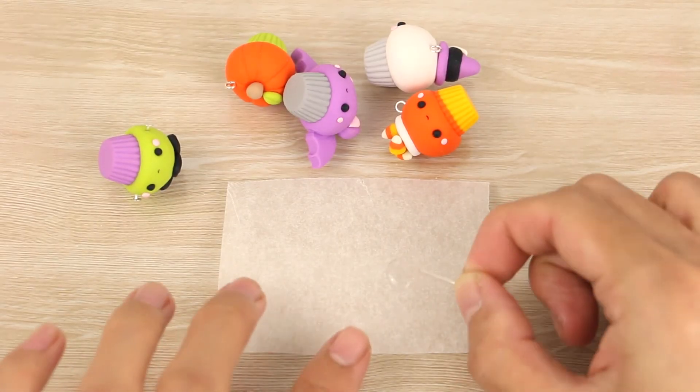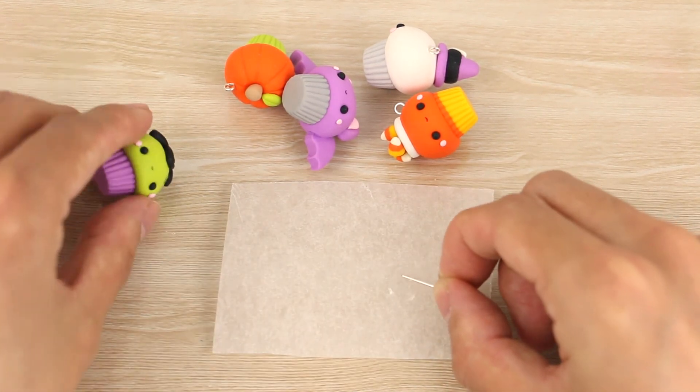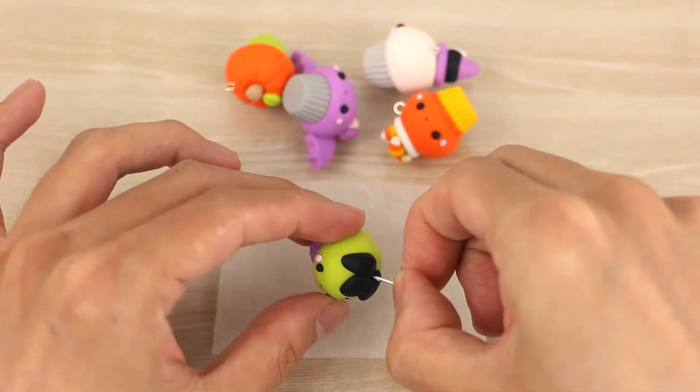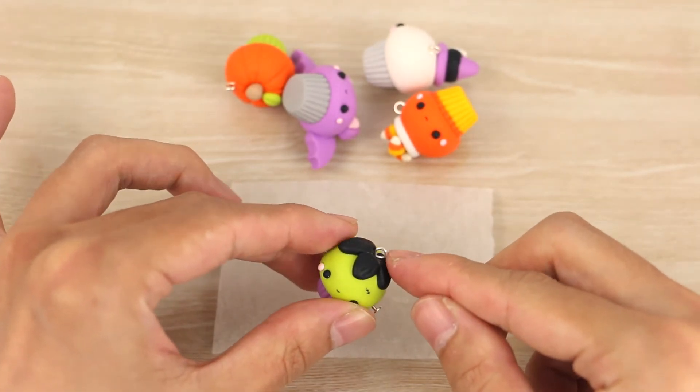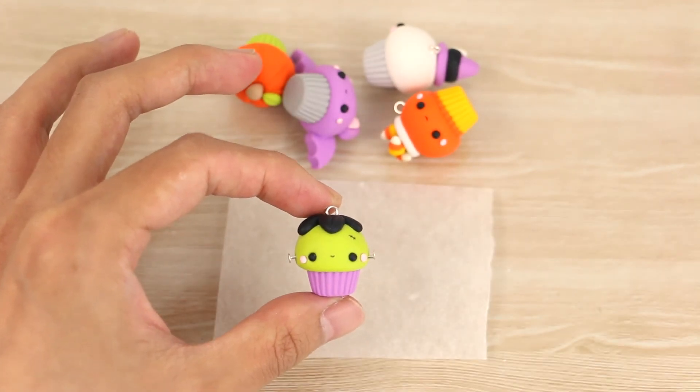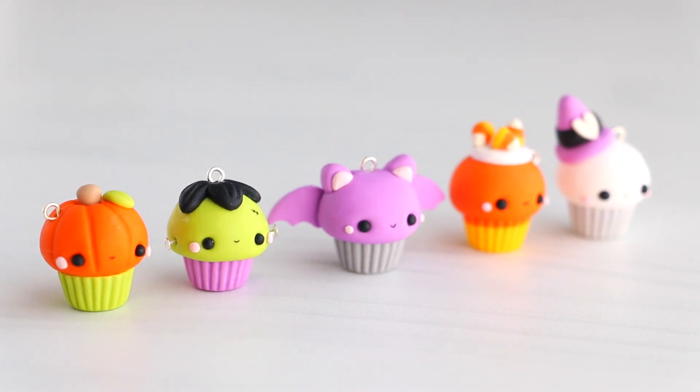So now after all the cupcakes have been baked according to my package's instructions, I'm securing the eye pins with super glue so that they don't fall out. And to make them look more like real cupcakes I'm not going to glaze them but just leave them as they are with a matte finish. And that's all for this tutorial. If you like this video give it a big thumbs up and subscribe for more. Thank you so much for watching and I'll see you next time. Bye bye.